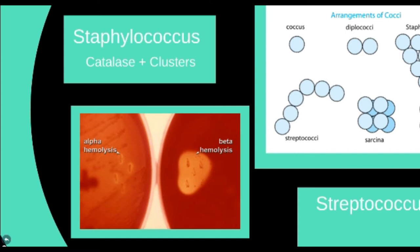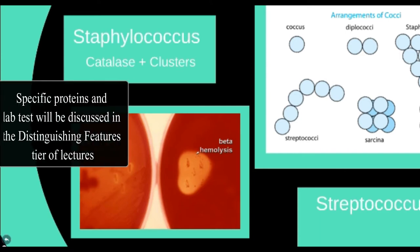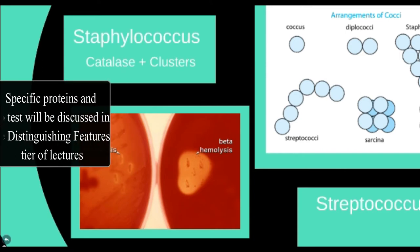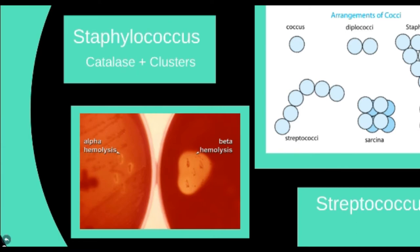Staphylococcus also has an enzyme called catalase that allows it to evade immune cells. The function of catalase is to help break down hydrogen peroxide. This hydrogen peroxide is used by certain immune cells to help fight off bacteria and other microbes, so by breaking down the peroxide using this enzyme, the bacteria can escape the immune system.